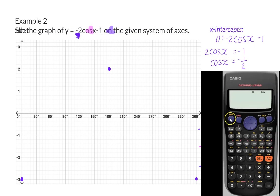Next, if you take your calculator and say shift of cos minus 0.5, you will see that the first x-intercept is at 120 degrees.